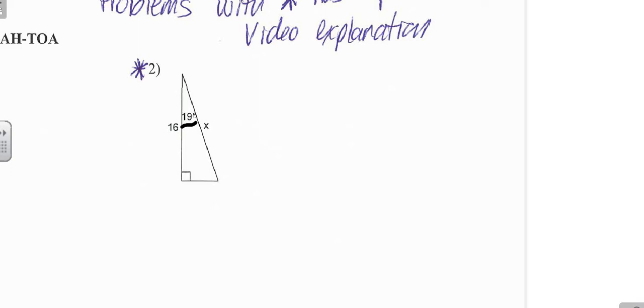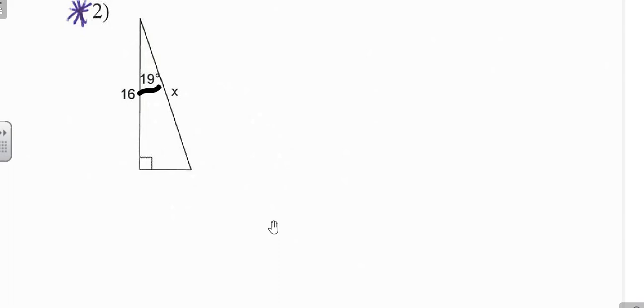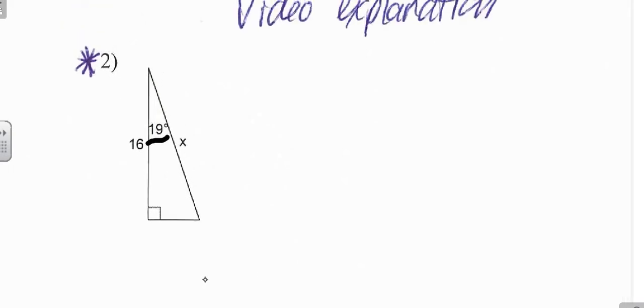You're told right here: have, need. We know it's not a 30-60-90, we know it's not a 45-45-90 because of that 19 degrees there. We know it's not a have two sides need third side because we don't have two sides, so we're going to use SOH-CAH-TOA.